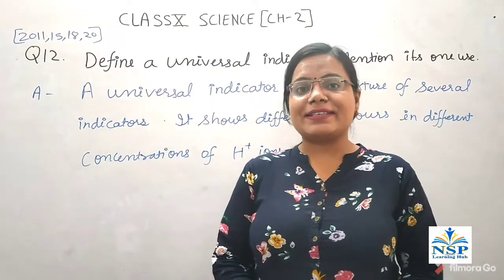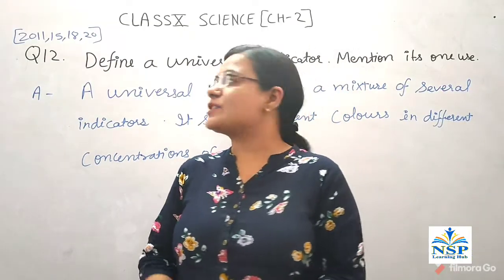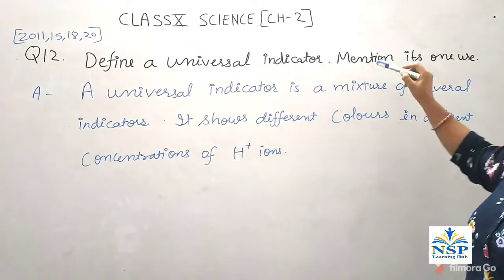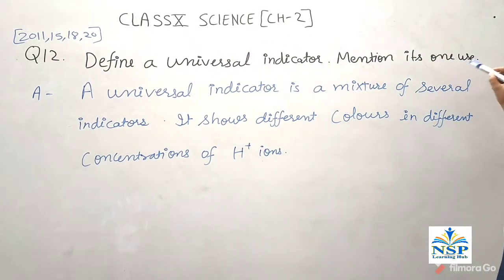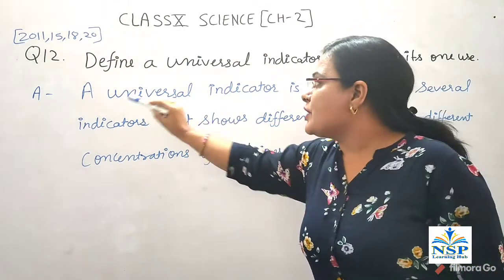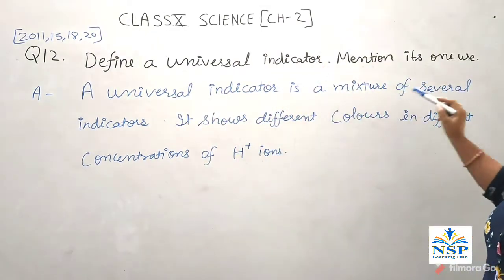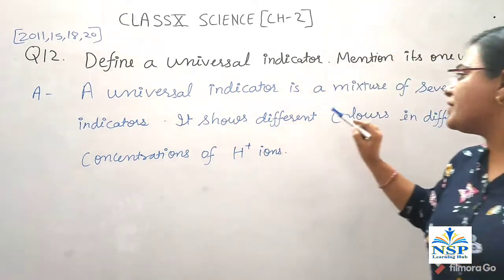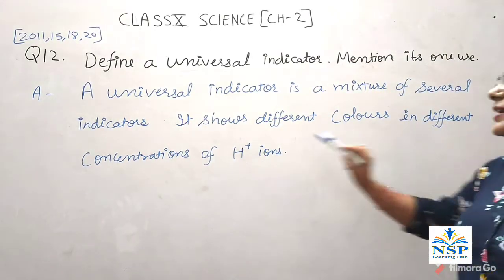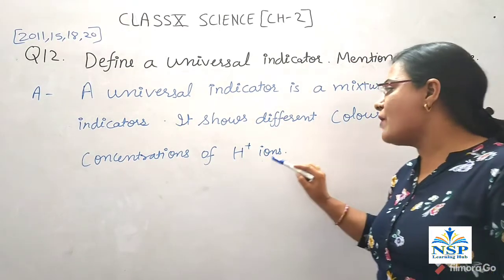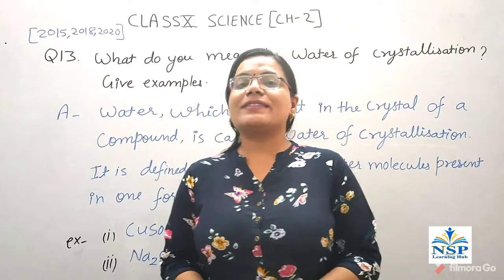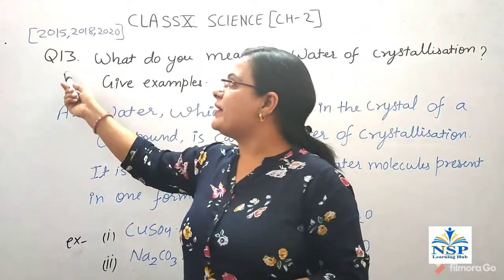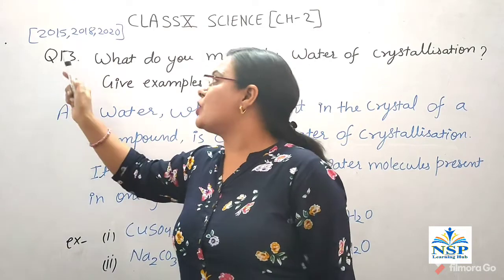Question number 12: A universal indicator is a mixture of several indicators. It shows different colors in different concentrations of H+ ions.